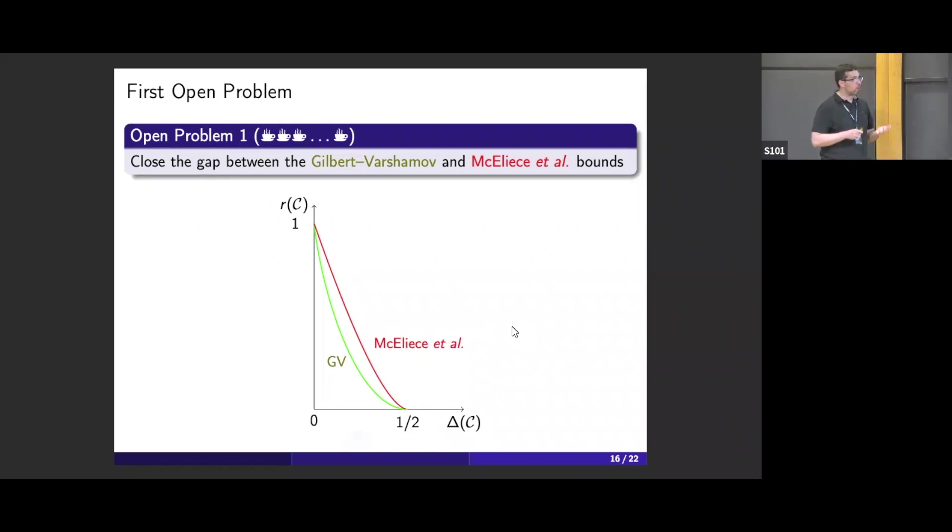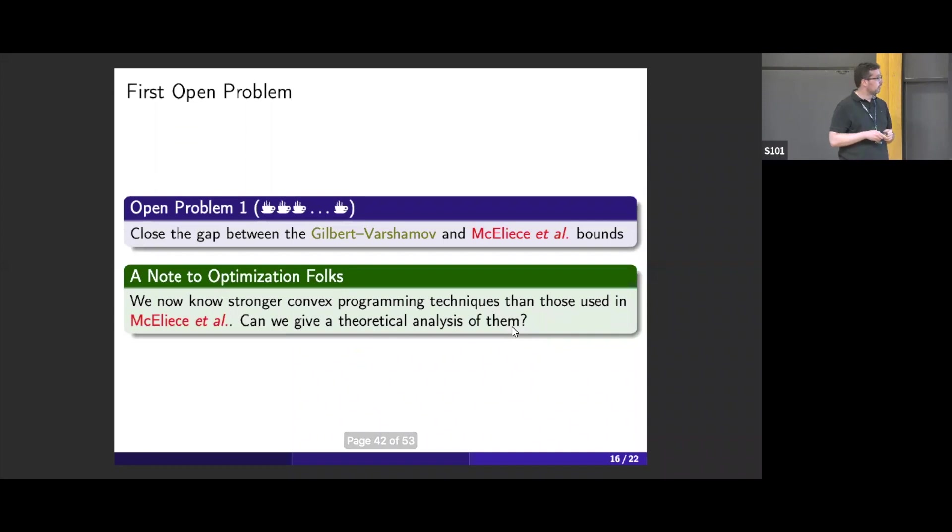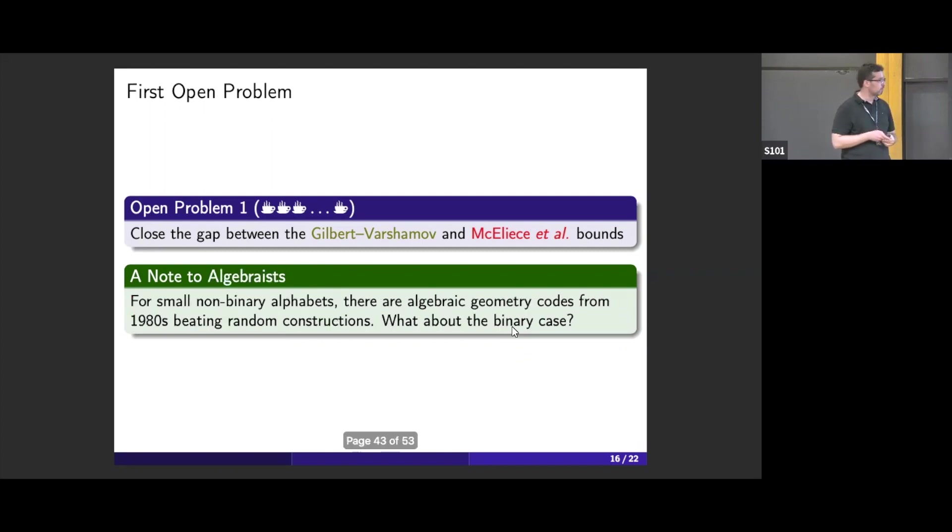One well-known question in coding theory is: close the gap. You have the bound for random codes and the best upper bound. Can you narrow this big gap between the two? That's the first open problem we're discussing here. The best upper bound was proven using linear programming. Now we have better convex programming techniques. Can you analyze those techniques theoretically to give a better upper bound? If you like optimization, that might be a good question. If you like algebra, we know codes over small alphabets, unfortunately non-binary, that beat the random constructions. For alphabets as small as 49, we have codes that beat the random. But for binary, we don't know.